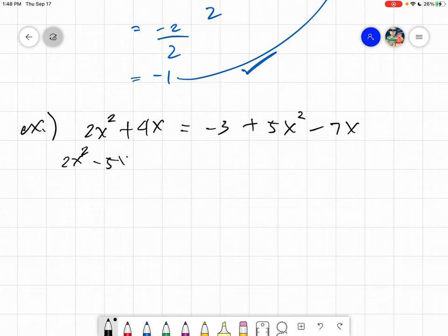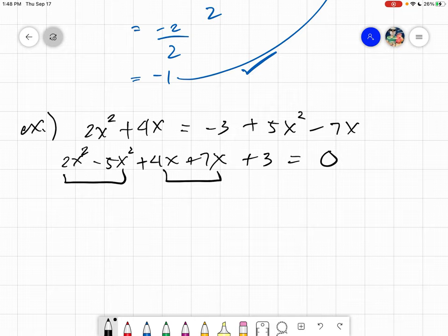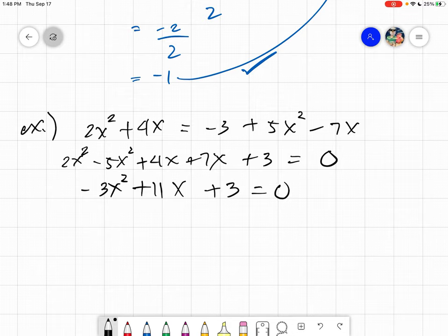We will move everything to one side and group terms that should be together. Those with x squared are related. This is 2x squared, and when we transpose from the other side, it becomes negative 5x squared, plus 4x plus 7x plus 3 equals 0. We evaluate the number parts only. What is 2 minus 5? The answer is negative 3x squared. What is 4 plus 7? The answer is positive 11x plus 3 equals 0.